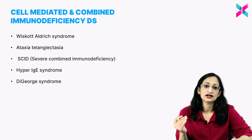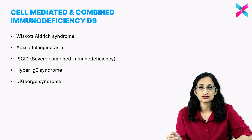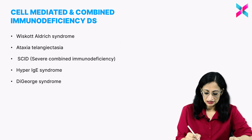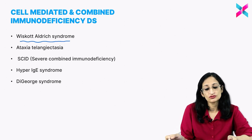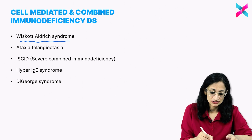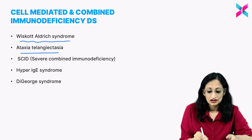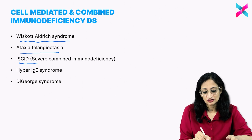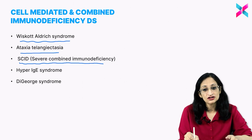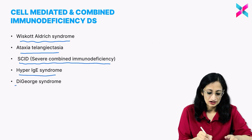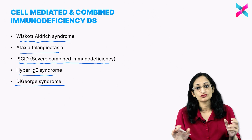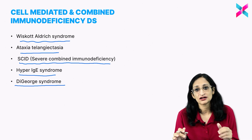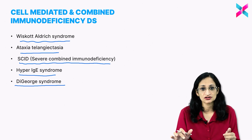Cell-mediated and combined immunodeficiency disorders. In this category we have Wiskott-Aldrich syndrome, which is a very important one especially for the INI and INICT pattern, ataxia telangiectasia, SCID or severe combined immunodeficiency, hyper IgE syndrome, and DiGeorge syndrome. These are some of the disorders where there is a cell-mediated and combined immunodeficiency disorder.